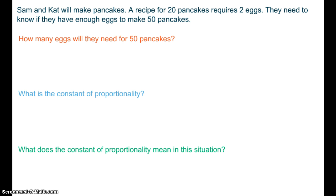So I have 3 questions. How many eggs will they need for 50 pancakes? What is the constant of proportionality? And what does the constant of proportionality mean in this situation? Copy this situation down again, write down the 3 questions, and then I'd like you to go ahead and set up a table and see if you can solve for 50 pancakes.